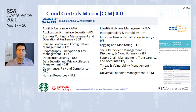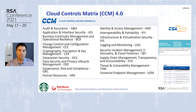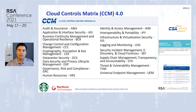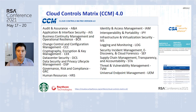The Cloud Controls Matrix is one of the bigger products the CSA puts out. There are 17 domains in the Cloud Controls Matrix version 4.0, which came out about three months ago. The Application and Interface Security domain — I believe it's number seven — includes aspects of threat modeling, where you would put those into your organization and control for those within a cloud environment.